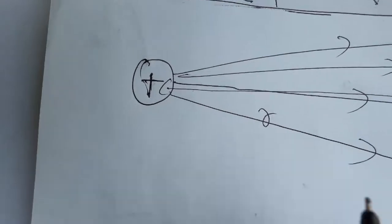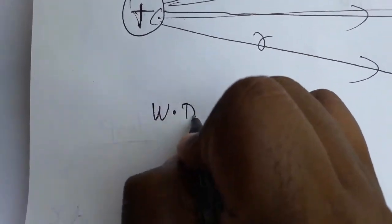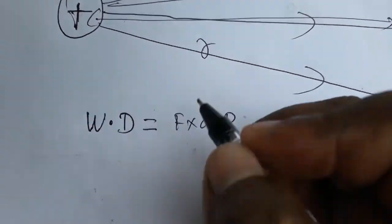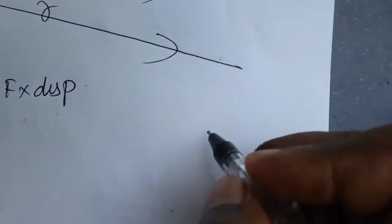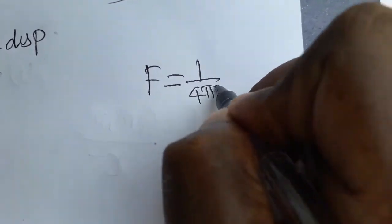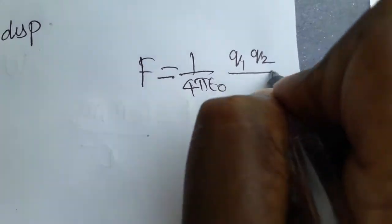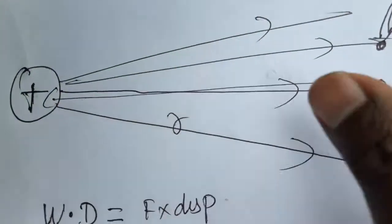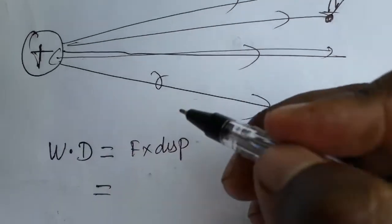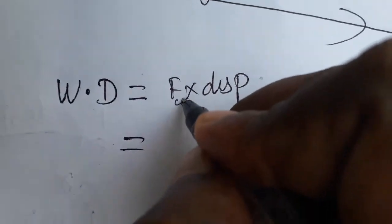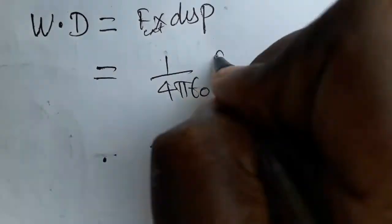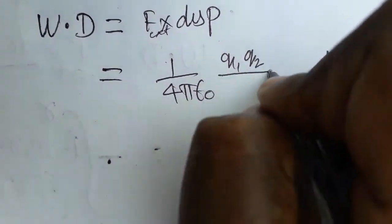We know work done is force into displacement. Here, the force is the electrostatic force — it's Coulomb's force: F equals 1 divided by 4 pi epsilon naught times q1 q2 divided by r squared. I am taking x as the distance. This is the external force required to bring the charge, so F equals 1 divided by 4 pi epsilon naught times q1 q2 divided by x squared.